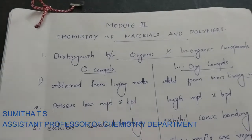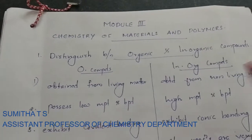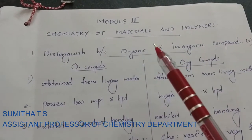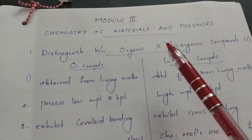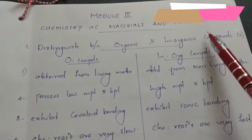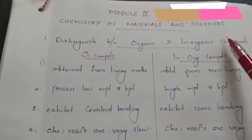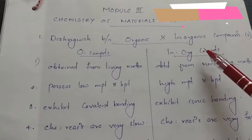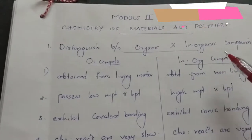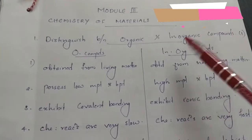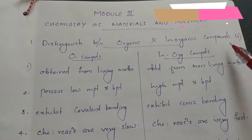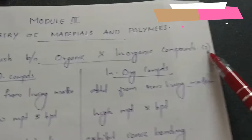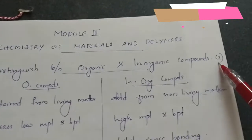Hi students, this is Module 3: Chemistry of Materials and Polymers. In this session, we will discuss the important questions. I am going to talk about the marks in the brackets.